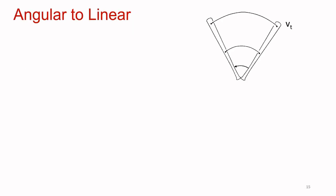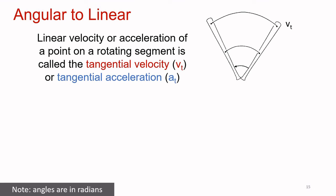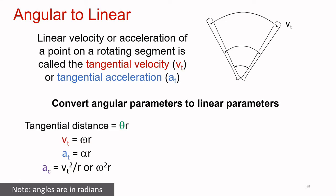How do you get from a measure of angular motion to a measure of linear motion? For example, if I'm rotating a bat through 180 degrees per second, how fast is the end of the bat going? The quantity here is the tangential velocity of the end of the bat, which determines how far the ball will go when you hit it. The linear velocity or acceleration of a point on a rotating segment is called the tangential velocity, v subscript t, or tangential acceleration, a subscript t.